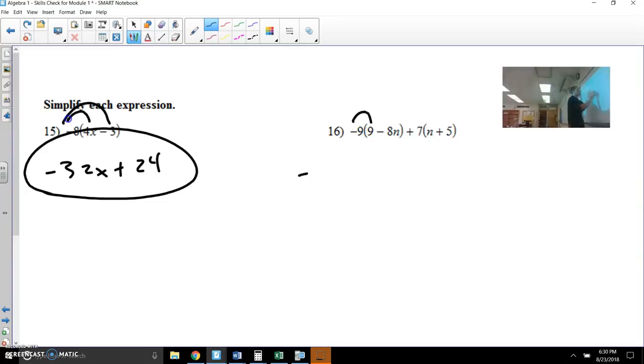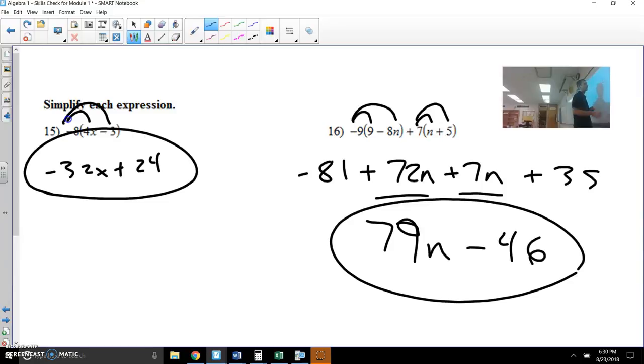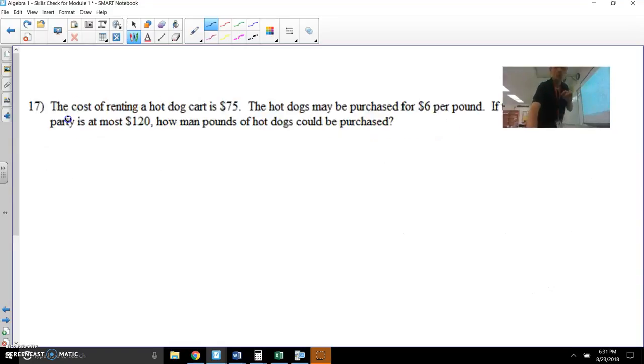Negative 9 times 9, negative 81. Negative times a negative is positive, and then 9 times 8 is 72 with an N there. Let's keep multiplying. 7 times N is 7N, and 7 times 5 is 35. So now I'm looking at numbers that should be combined. 72N and 7N are like terms, 79N. And then we have negative 81 plus 35, that is negative 46. And we're going to stop right there because this is an expression. You cannot combine like terms if they have different types of variables or one is a constant.